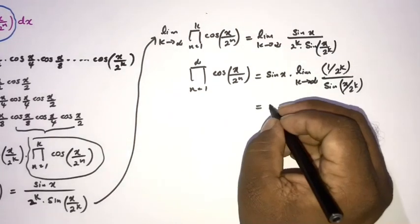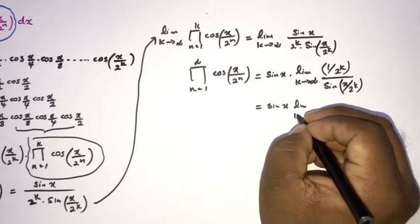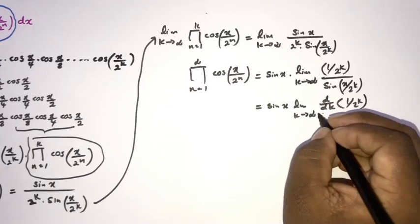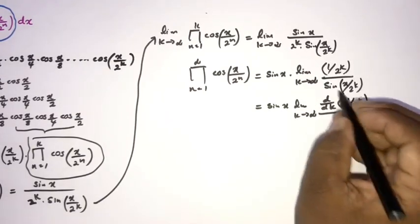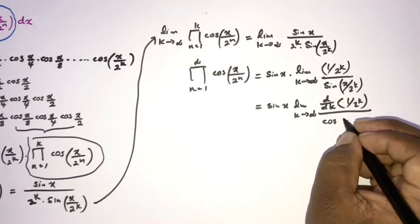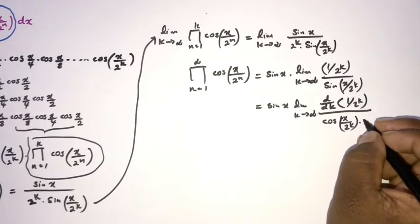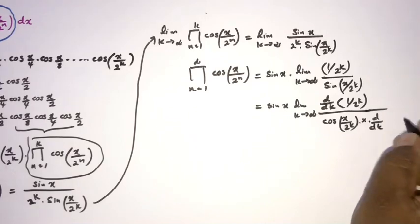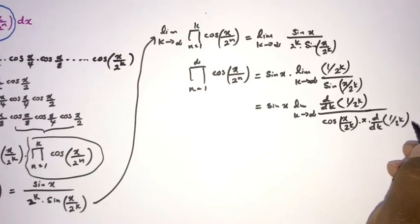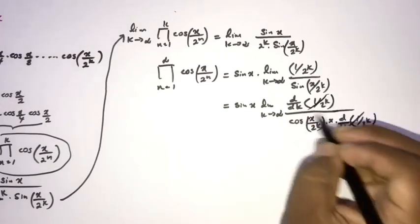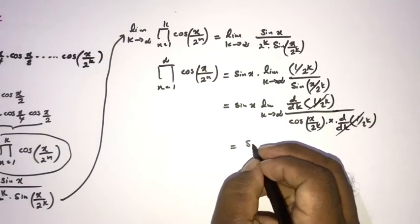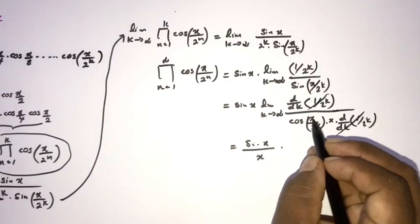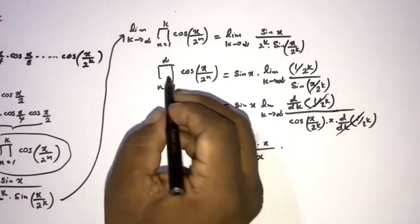Applying L'Hôpital's rule, we take the derivative with respect to k of both numerator and denominator. The derivative of 1 over 2^k and the derivative of sine of x over 2^k involve cosine of x over 2^k times the chain rule factor. These terms cancel, and as k approaches infinity, cosine of x over 2^k approaches cosine of 0 equals 1. So the infinite product equals sine of x over x.